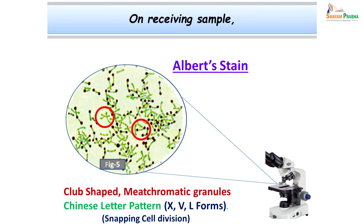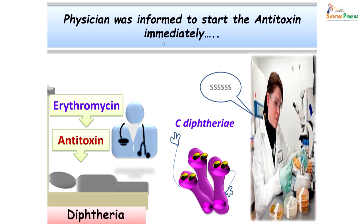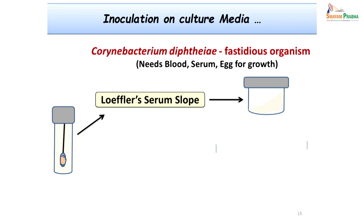These two microscopy findings were very important and directly gave us the clue that this could be a case of diphtheria. Immediately the physician was called within 15 minutes and informed to start the antitoxin, which was done along with the antibiotic. The next task was to grow the bacterium and prove its toxigenicity, as these organisms could be just bystanders or commensals. We proceeded by subjecting the sample for culture, isolation, identification, and toxigenicity testing.